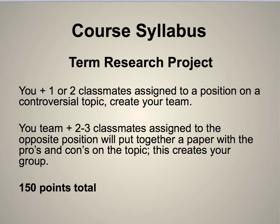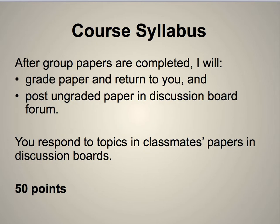This group project is 150 points total. You write one paper together, 12 to 15 pages in length. Once the papers are completed, you submit it to me through Blackboard, I grade it and return it in Blackboard. I will then take your ungraded paper and post it in a discussion board forum so your classmates can read it and participate in a discussion about the topic. So everybody gets a chance to read everybody else's paper and provide input — not so much about the quality of the paper, but about the topic itself. This all unfolds in the last month of the semester.